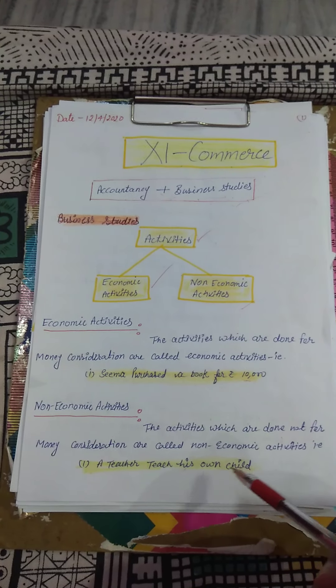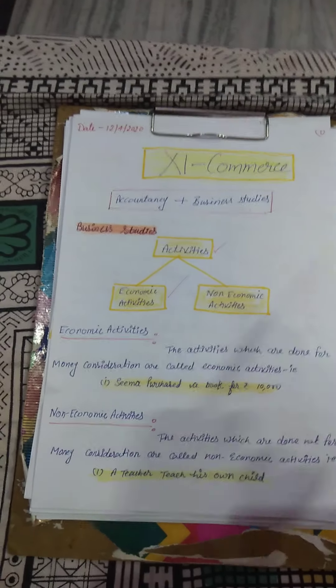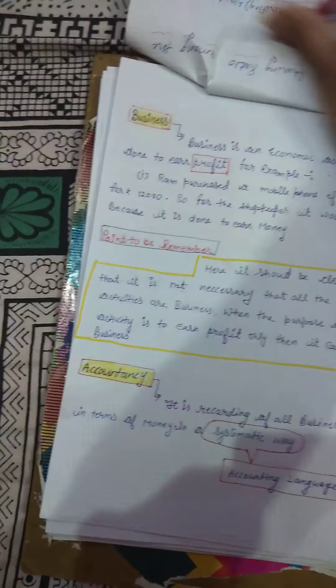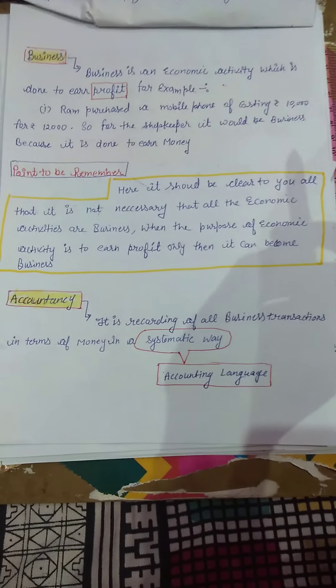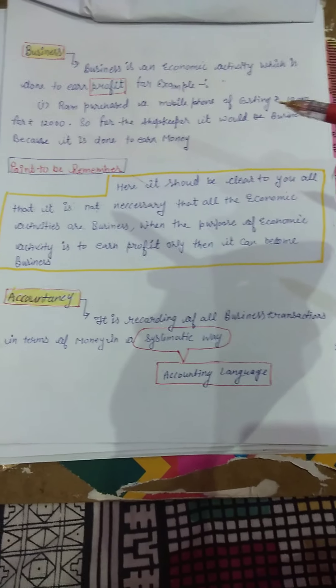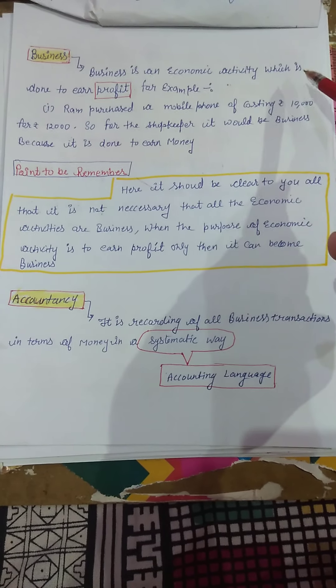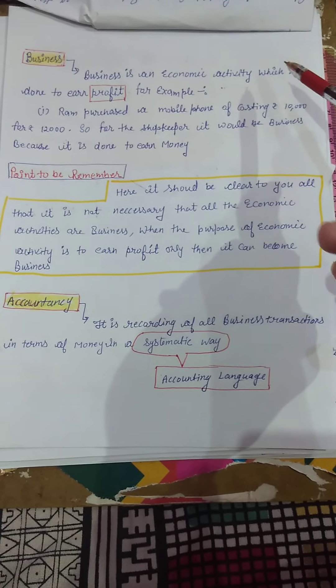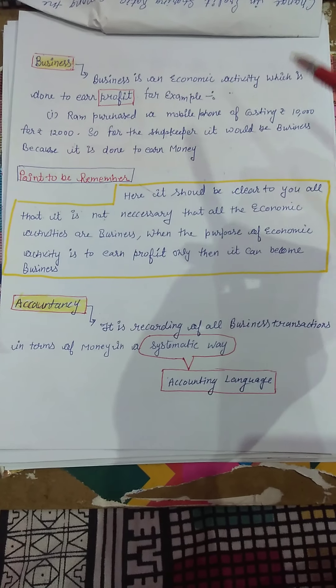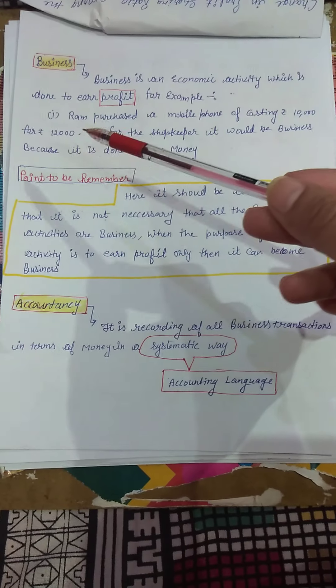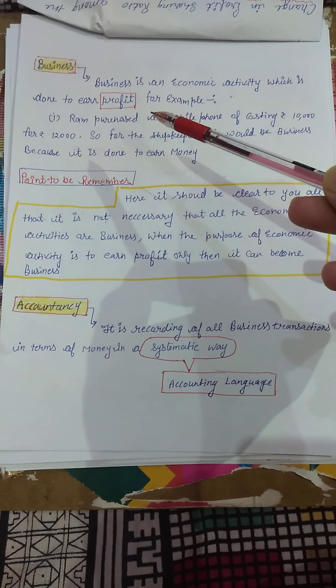The second type is non-economic activity. These are activities which are not done for money consideration — na paisa aata hai aur na hi paisa jaata hai. For example, a teacher teaching his or her own child — that is a non-economic activity.